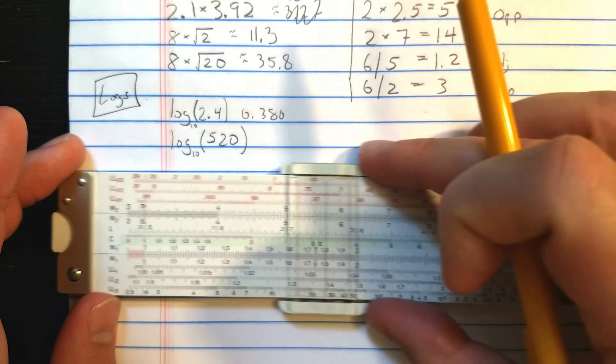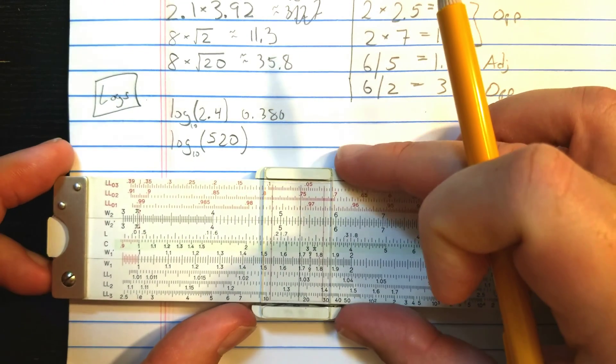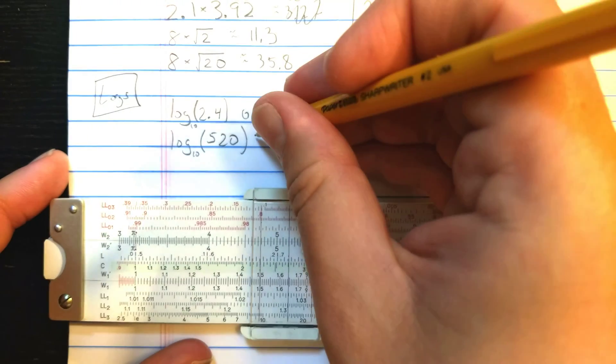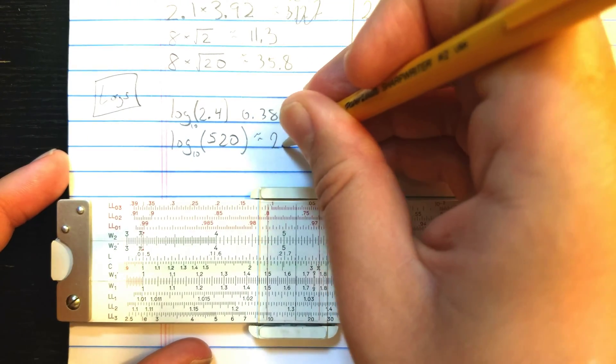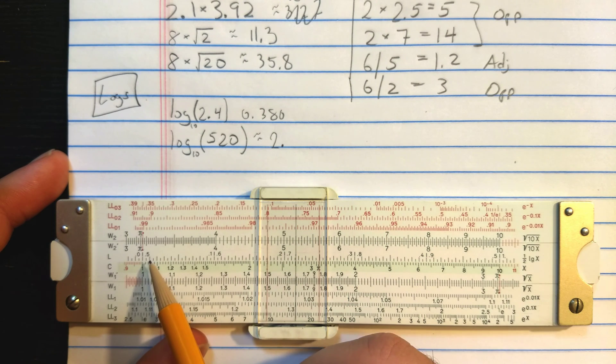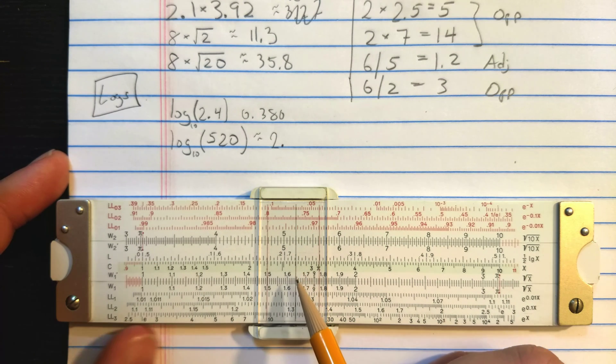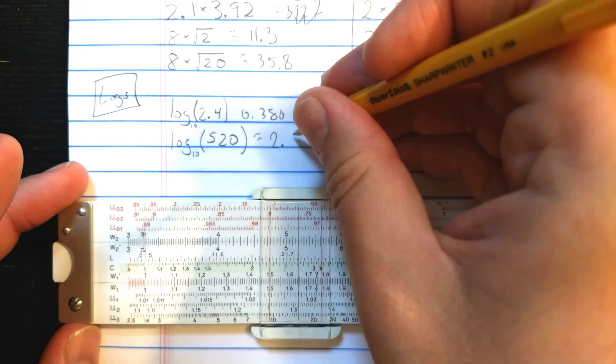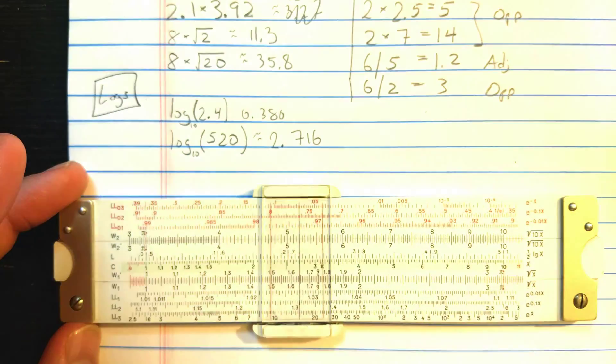Whereas a number like 5.2, I want the log of 520. That's on W2. I know I need to start this with a 2. But since that's on W2, you use these numbers on the right. So 0.5, 0.6, 0.7, looks like 0.716.